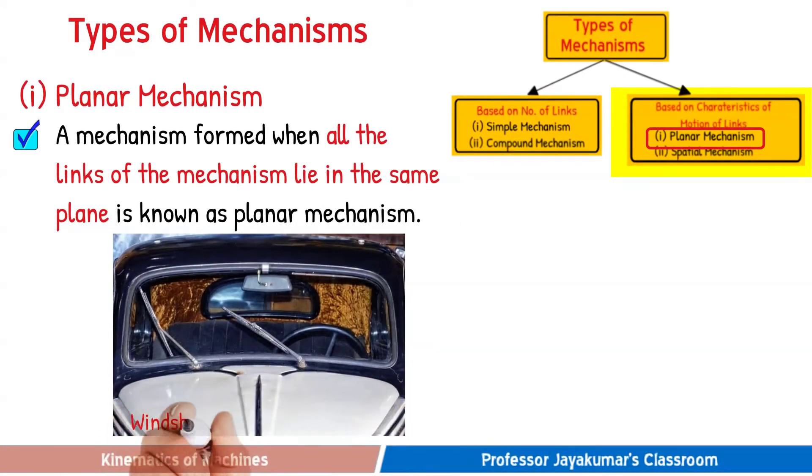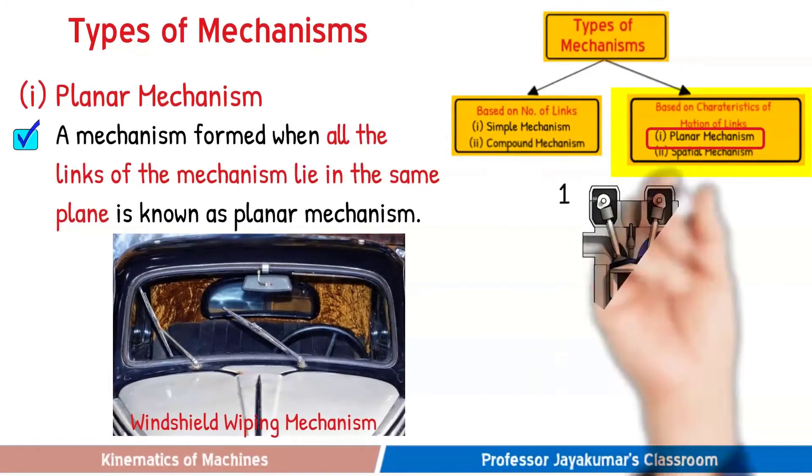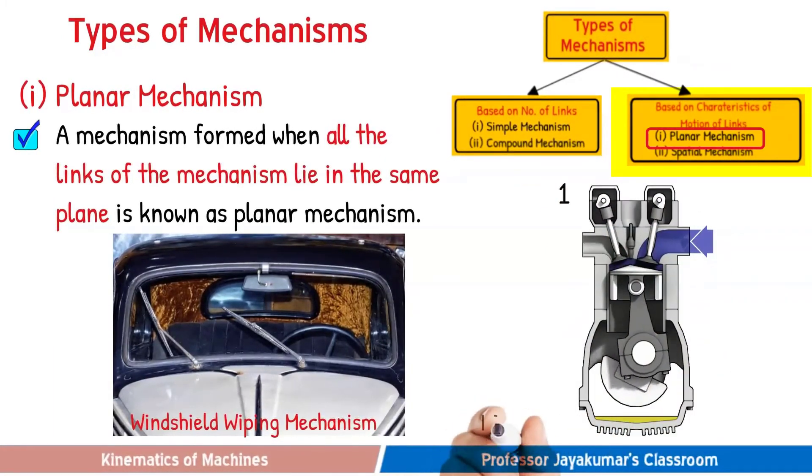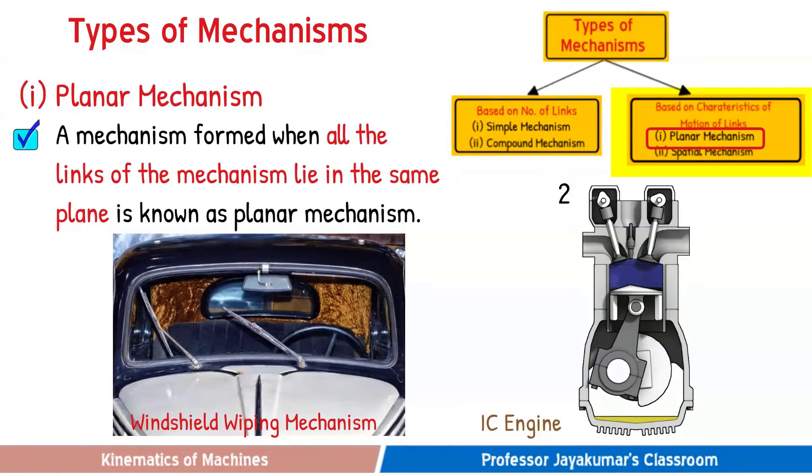Consider a windshield wiping mechanism that are being used in automobiles. You can see that all links of this particular mechanism lie in the same plane and hence it is a typical planar mechanism. Similarly, consider IC engine in which various links are slider, kinetic rod, crank and cylinder lie on the same plane.